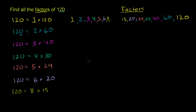Let's move on to 10. This is pretty straightforward — 120 ends in 0, so it is divisible by 10. 120 equals 10 times 12. This is exactly what 120 is — it's 10 times 12. So let's write those factors down: 10 and 12.